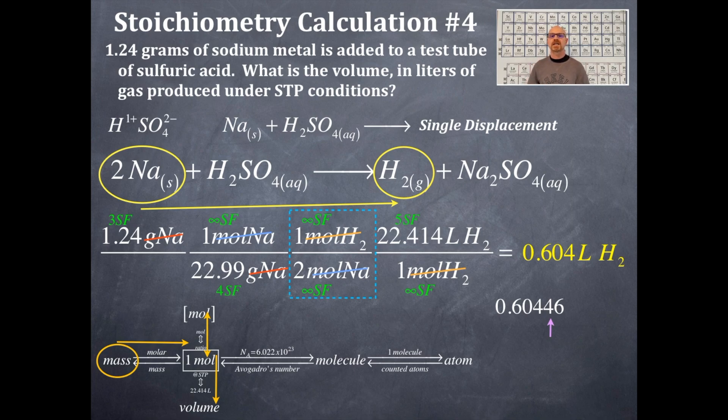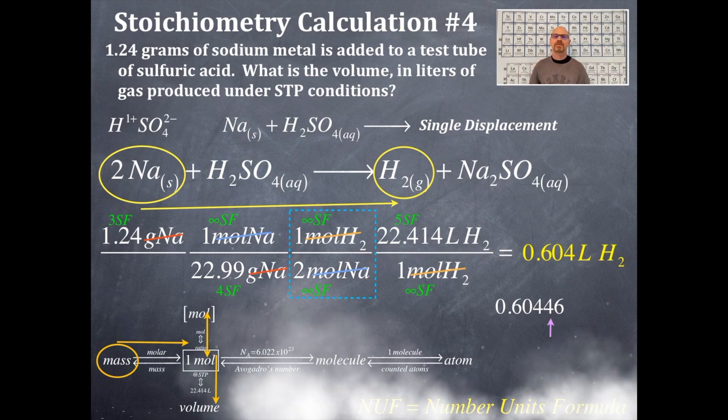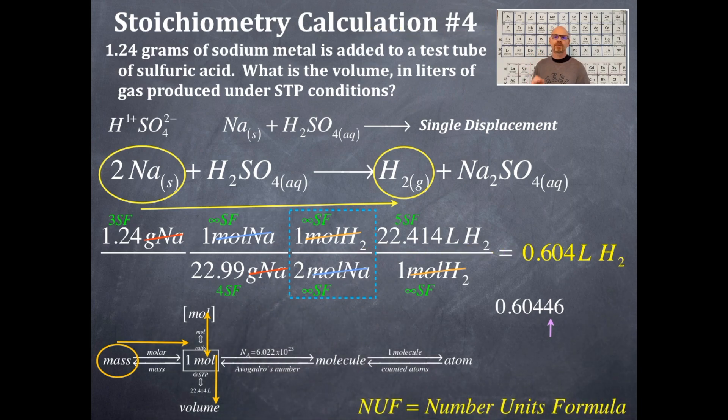You could have written this as 6.04 times 10 to the negative 1 liters of hydrogen gas. That would have been fine. But I do have a number, units, and a formula for every single step along this problem as well as my answer.